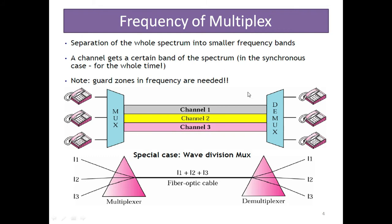With reference to this diagram, we understand that here is the multiplexing (many to one) and here is the demultiplexing (one to many). Channel one is allocated a fixed, particular, specified frequency; similarly for channel two and channel three also.